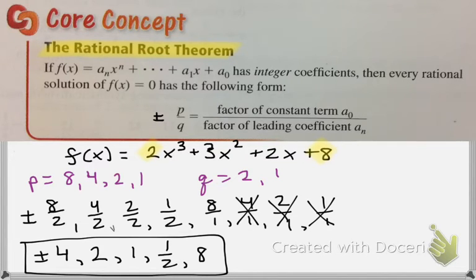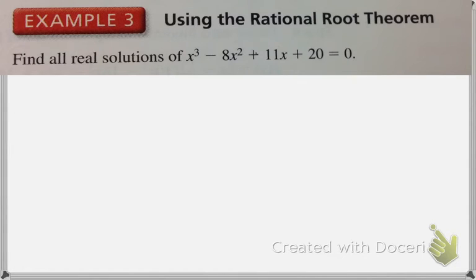That's 10 potential answers because of plus or minus for each of them. So then you would use synthetic division to start checking zeros until you find one that works. Let's give one of these a try. These can be a little bit tedious, so you'll notice on the homework I will give you hints of where to start. But let's look at this polynomial and start by listing out all of our potential zeros using the rational root theorem.